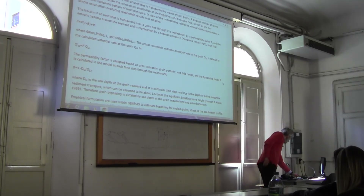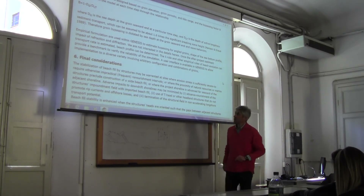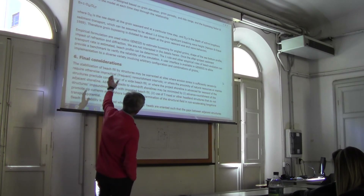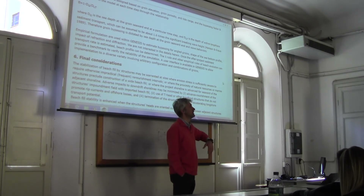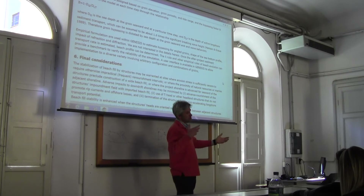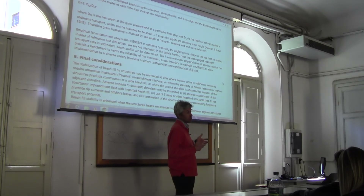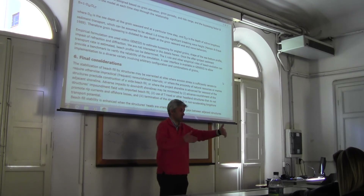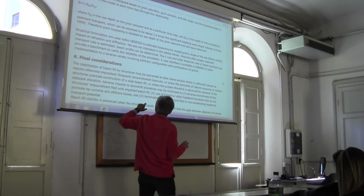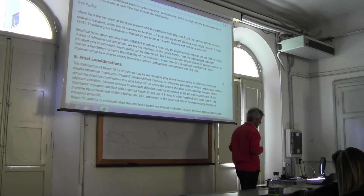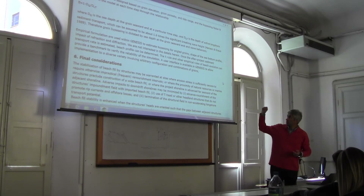Also, the model uses empirical formulations to estimate bypassing for groins that are placed at an angle, and for different shapes of the groin, bypass may be increased or decreased. If you use a T-shaped groin, bypass is lower because sediment flux below the groin is blocked by the T. So there are several empirical formulas that allow us to correct the sediment transport as computed by empirical formulas after the displacement of groins.